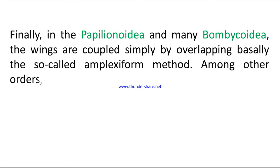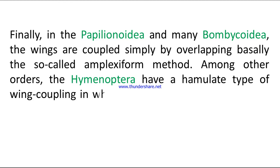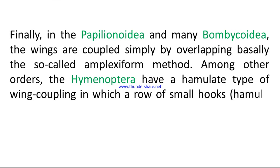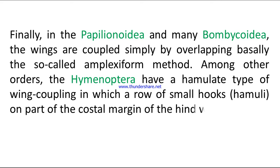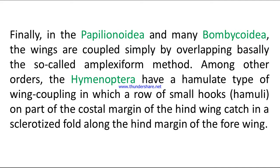Among other orders, the Hymenoptera have a hamulate type of wing coupling in which a row of small hooks on part of the costal margin of the hind wing catch in a sclerotized fold along the hind margin of the fore wing.